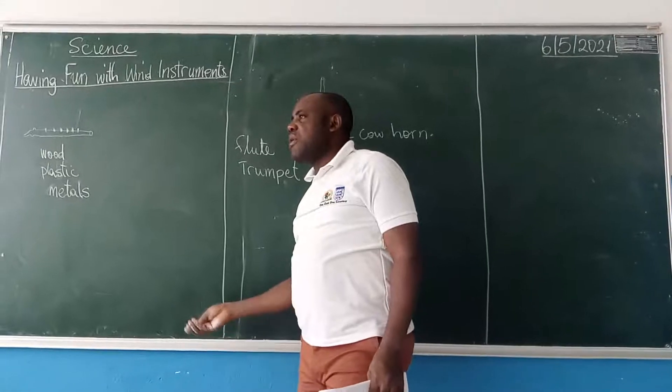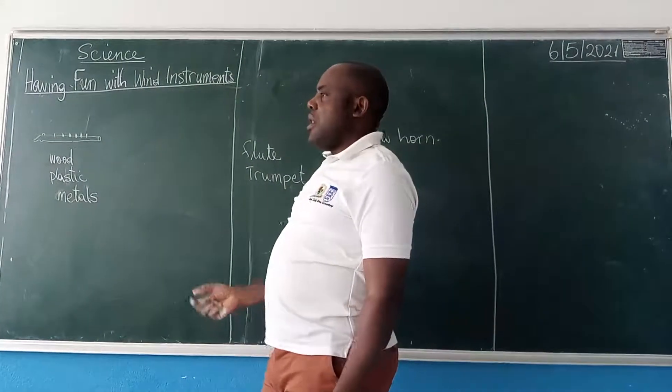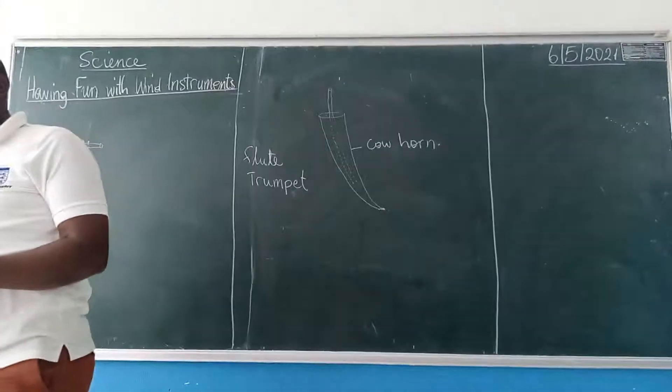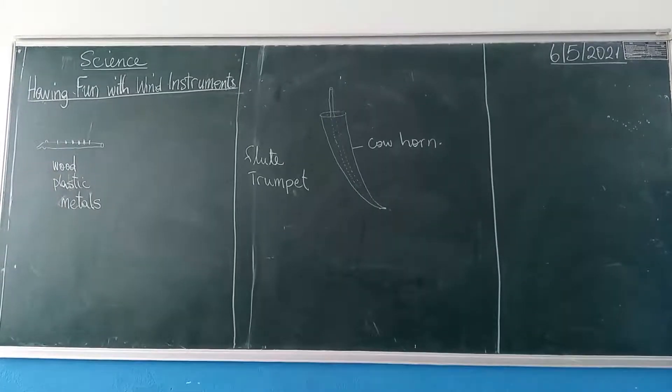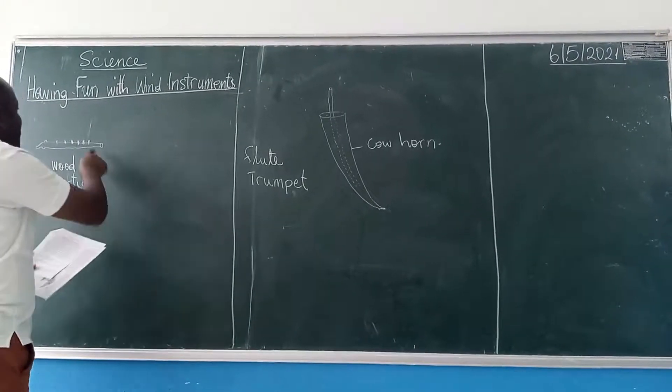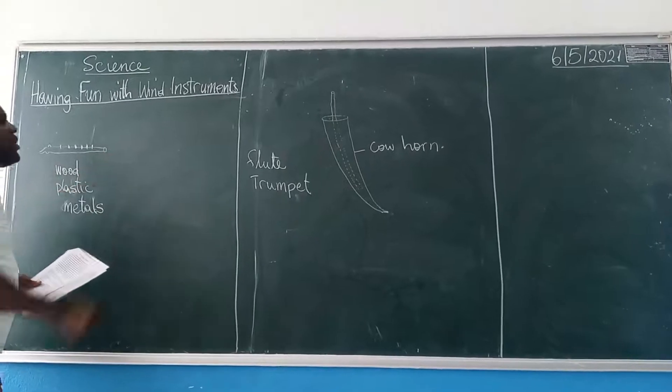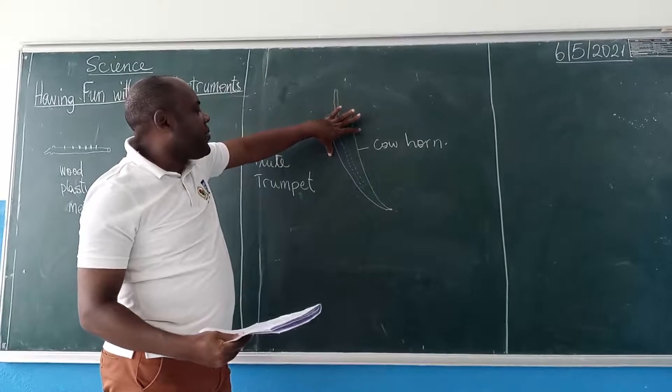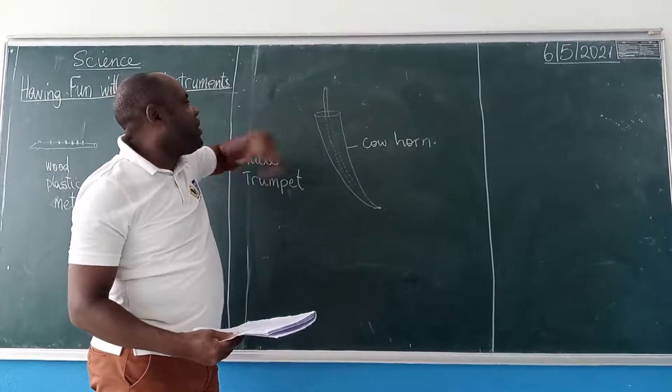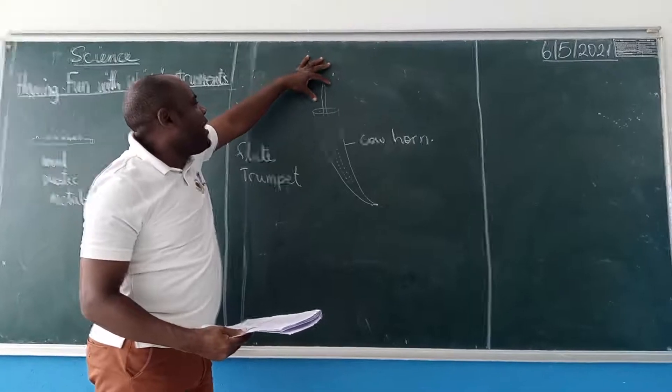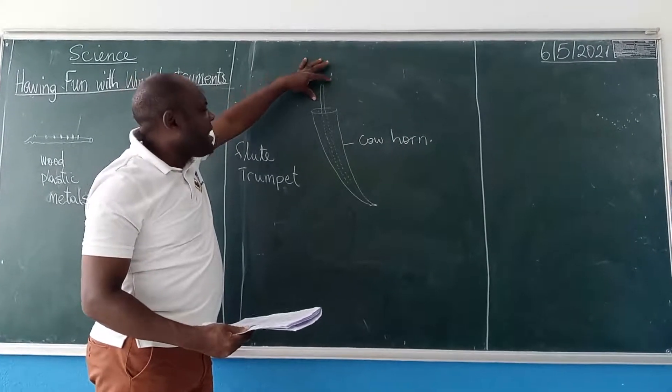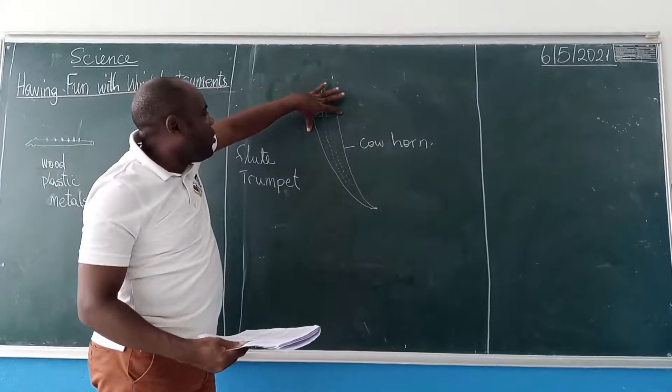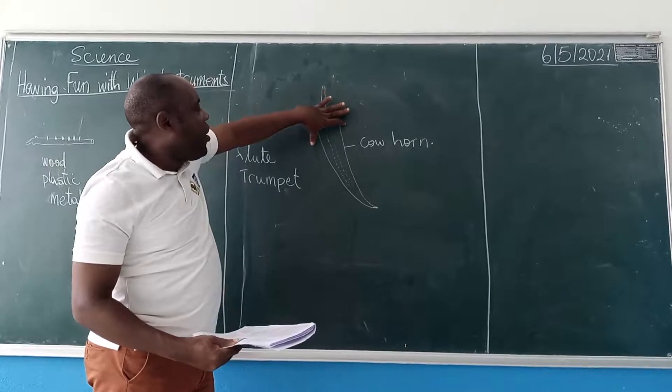They can use any of them to make a wind musical instrument. So this is called a pipe, a pipe. Like the example of this one I drew on the board, it is a traditional instrument that is used in my village. This is a pipe. The pipe can either be a wooden pipe, a plastic pipe, or a metal pipe. And then this one is the horn of a cow, the horn of a cow.